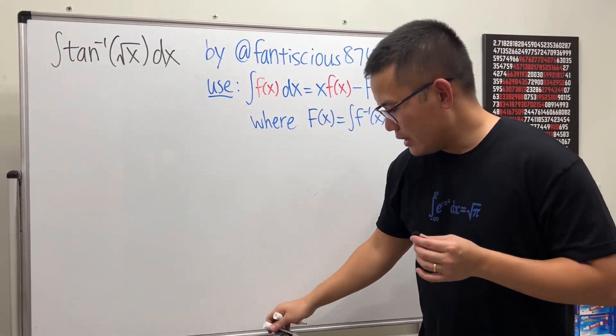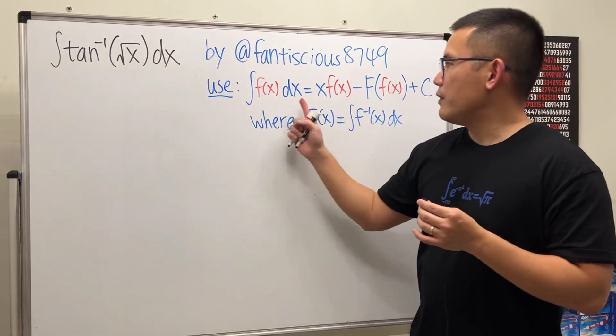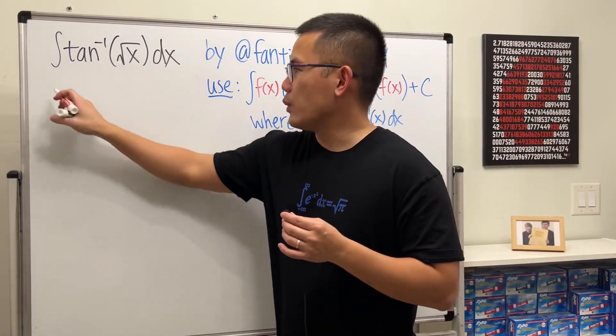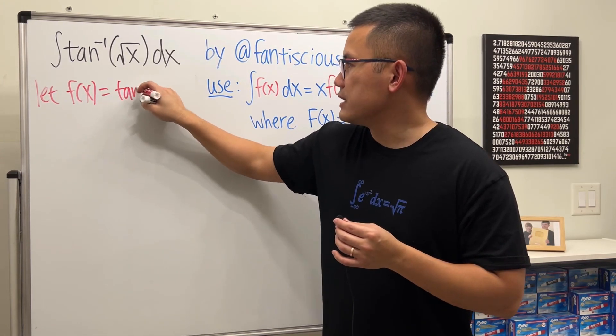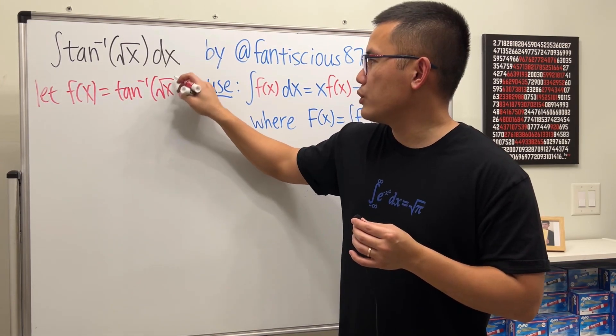So this is how it will work. First, our function is just that. So I will start off by saying our function is inverse tangent of square root of x.